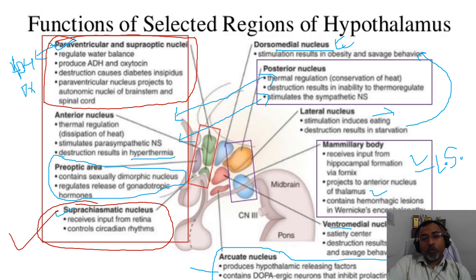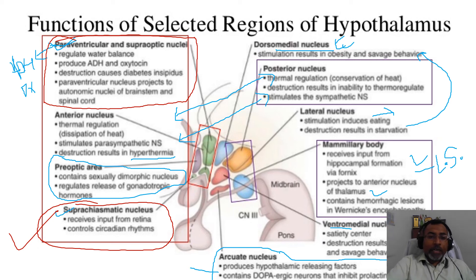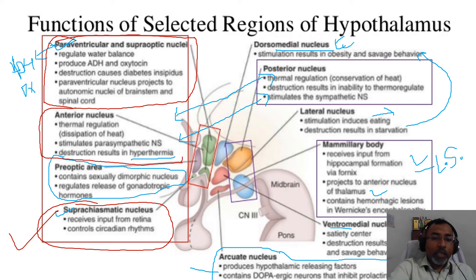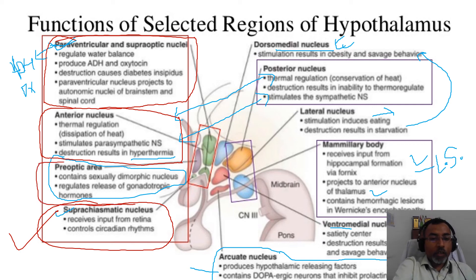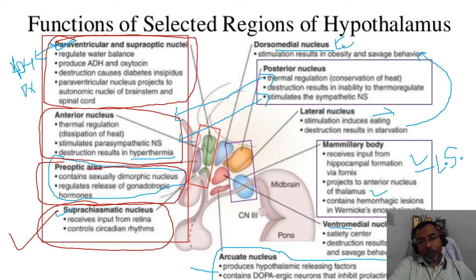The paraventricular nucleus projects to the autonomic nuclei of the brain stem and the spinal cord. Regarding the anterior nucleus, it is helpful for thermoregulation — it is responsible for the dissipation of heat, it stimulates the parasympathetic nervous system, and its destruction results in hyperthermia. The preoptic nuclei contain a sexually dimorphic nucleus and control the release of gonadotropin hormone.